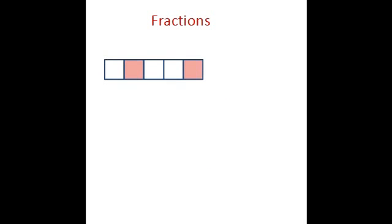Let's look at some more examples. Now here the rectangle is divided into one, two, three, four, five parts, and out of these five parts two are colored. So I can say that the colored area is two fifths or two over five.